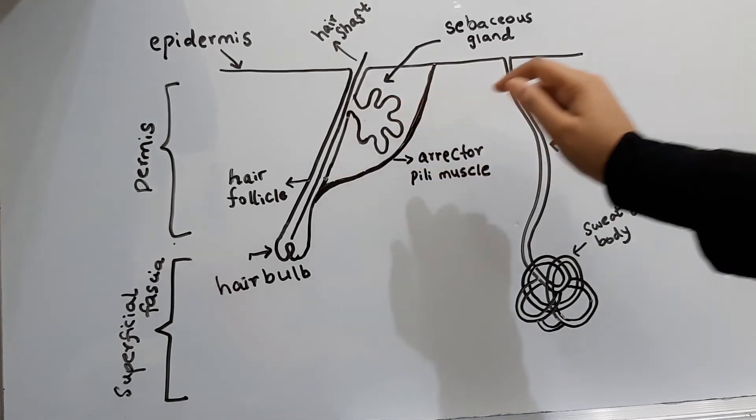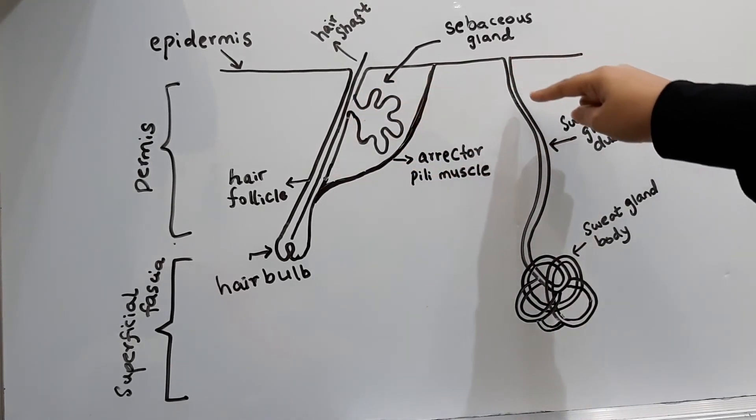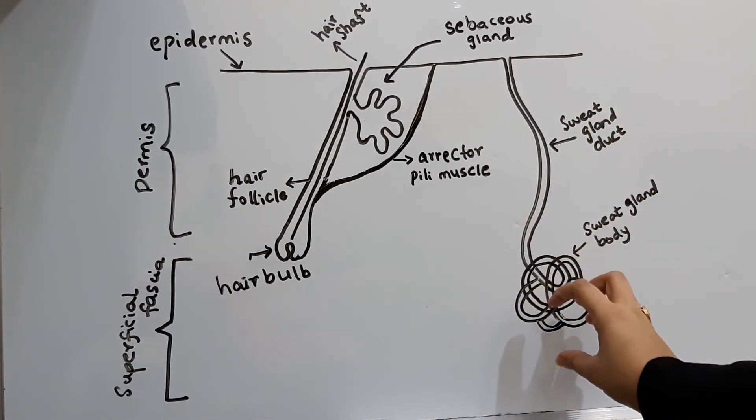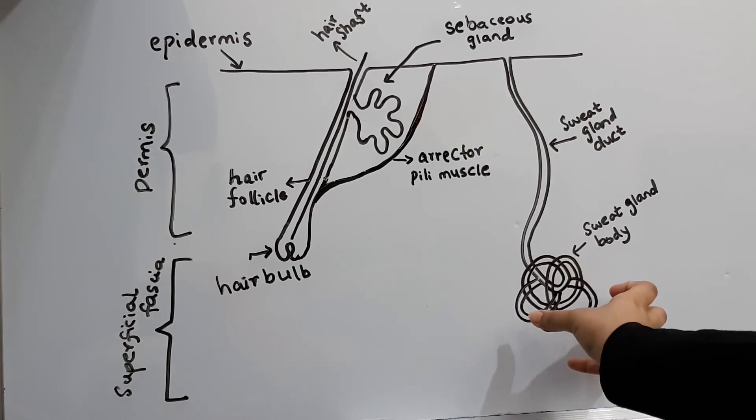While sweat glands extend to the full thickness of the dermis up to a point that they may even lie in the superficial fascia. Their extremities or their endings may even reach up to the superficial fascia, so they are the most deeply lying appendages of the skin.